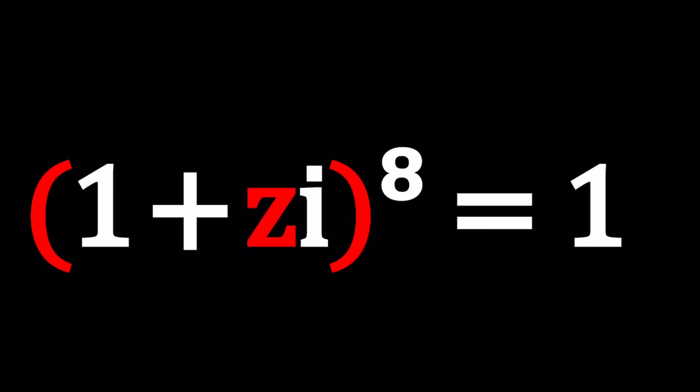Hello everyone, welcome to A plus B I. This channel is all about complex numbers, and in this video we're going to be solving a complex equation. We have (1 + zi)^8 = 1.